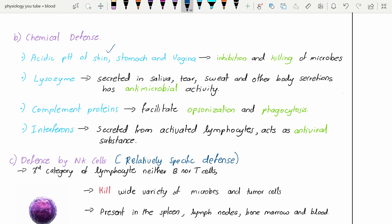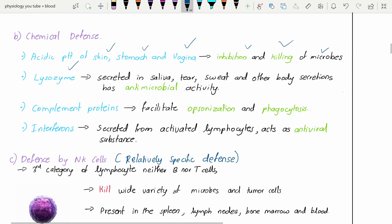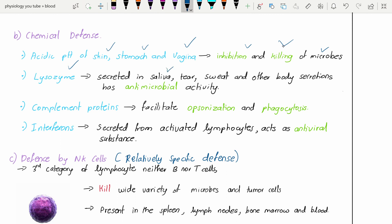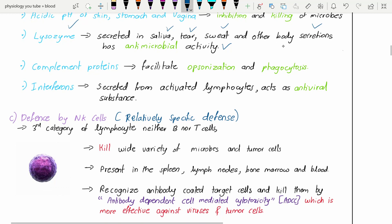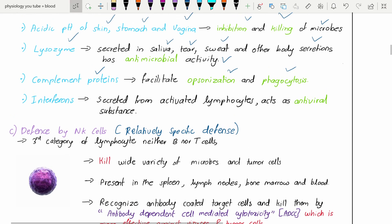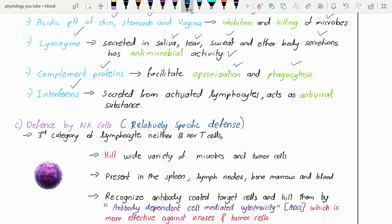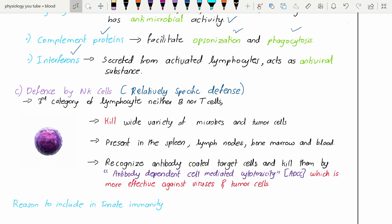Now the chemical defense. The acidic pH of the skin, stomach, and vagina inhibit and kill the microbes. Lysozyme - it's an enzyme secreted in saliva, tears, sweat, and other body secretions with antimicrobial activity. Complement proteins facilitate opsonization and phagocytosis. Opsonization is the process where the microbe is made tasty for the phagocytes. Interferons are secreted from activated lymphocytes and act as antiviral substances.